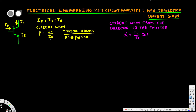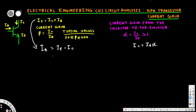We are going to write another equation for beta and also create an equation for alpha. To do that, we rearrange the first equation so that IB is equal to IE minus IC. We also know that IC is equal to IE times alpha, so substituting gives IB equal to IE minus IE times alpha, which simplifies to IE times (1 minus alpha).